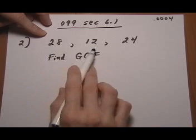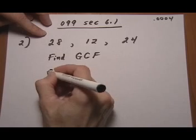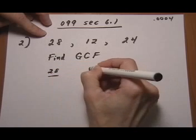So if you don't see it right away what it is, then just go ahead and list some factors of the numbers. You don't even have to list all the factors, just the ones that you can think of quickly.